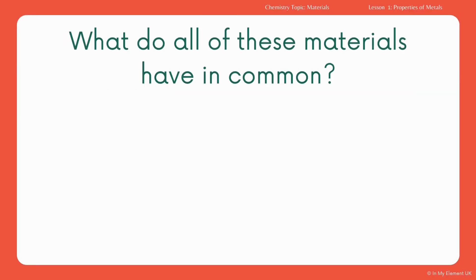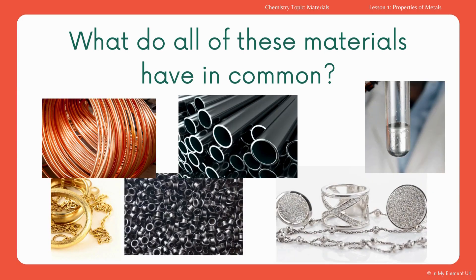You're going to have a look at some images and think about what all of these materials have in common. You've got some copper wire, underneath that some gold jewellery, then different pieces of lead in pipes and some fittings, then some silver jewellery, and in a test tube one of our more unique and special metals — mercury.